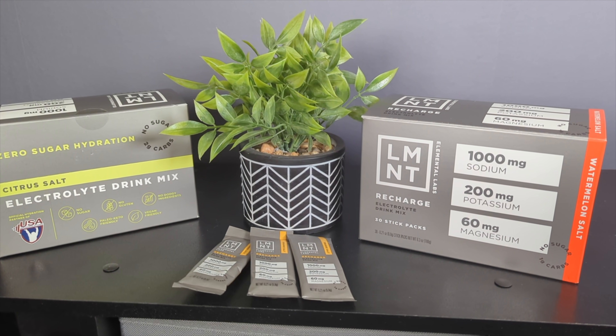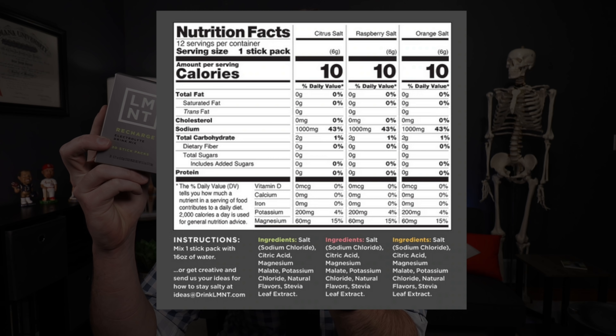Today's video is sponsored by Element, an electrolyte drink mix that features everything you need with electrolytes and nothing you don't. Our bodies rely on optimal electrolyte balances, from firing of nerves to contraction of muscle fibers. If you saw my recent video about Paolo Banchero, you know that you can lose a significant amount of sweat and electrolytes with high-level sports, which can unfortunately lead to things like cramping and fatigue. Element contains a science-backed electrolyte ratio: 1000mg of sodium, 200mg of potassium, and 60mg of magnesium, without any added artificial sweeteners, sugar, or other ingredients you simply don't need.